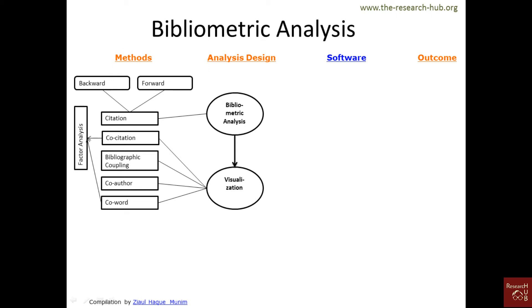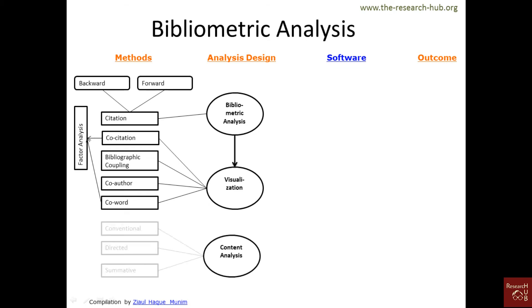Co-citation and co-word analysis can actually lead to factor analysis to find out the intellectual structure of a research field. We also have content analysis, which can be conventional, directed, and summative. There is an article linked below the video that gives more detail about these content analysis methods.